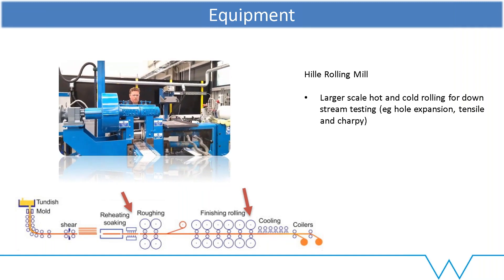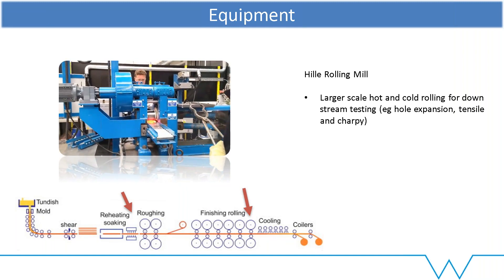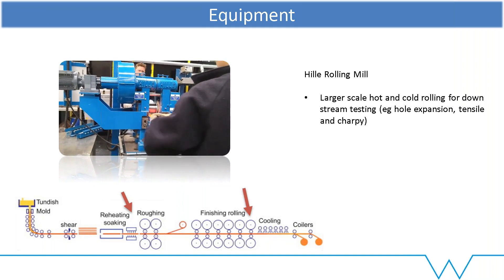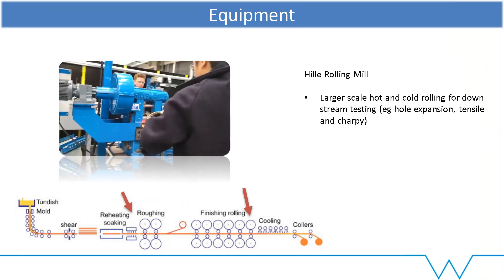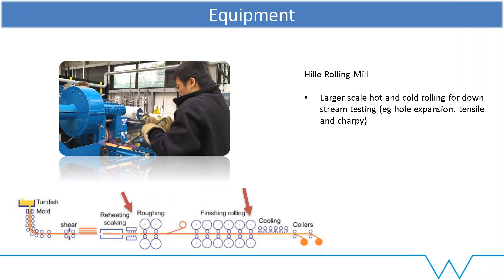If we need slightly larger samples, then we want to do some rolling. We've got the hot rolling mill, and we can typically roll from about 30 mm down to 3 mm hot, and then cold roll down to about 1 mm. This is much better if we want large samples — for hole expansion tests, for example, the samples are not small, so we need to go through this route.